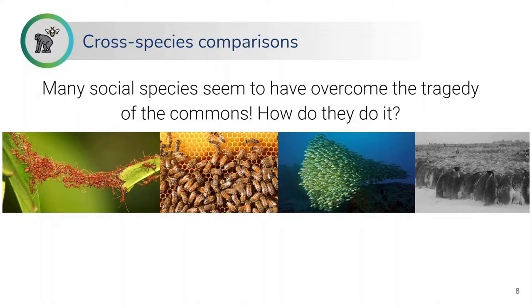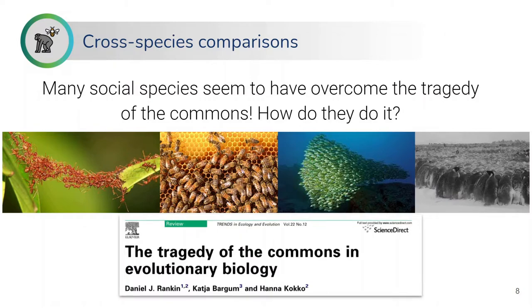Whether it's social insects that live in big colonies, or penguins in the Arctic that have to huddle together and create something of a fair situation so that they can all keep themselves warm, we can look at the mechanisms that allow them to suppress any kind of tragedy-of-the-commons result. Here is an example of a paper where evolutionary biologists summarize ideas of how we can think about the tragedy of the commons in evolutionary biology, looking at different species and what mechanisms allow them to cooperate.